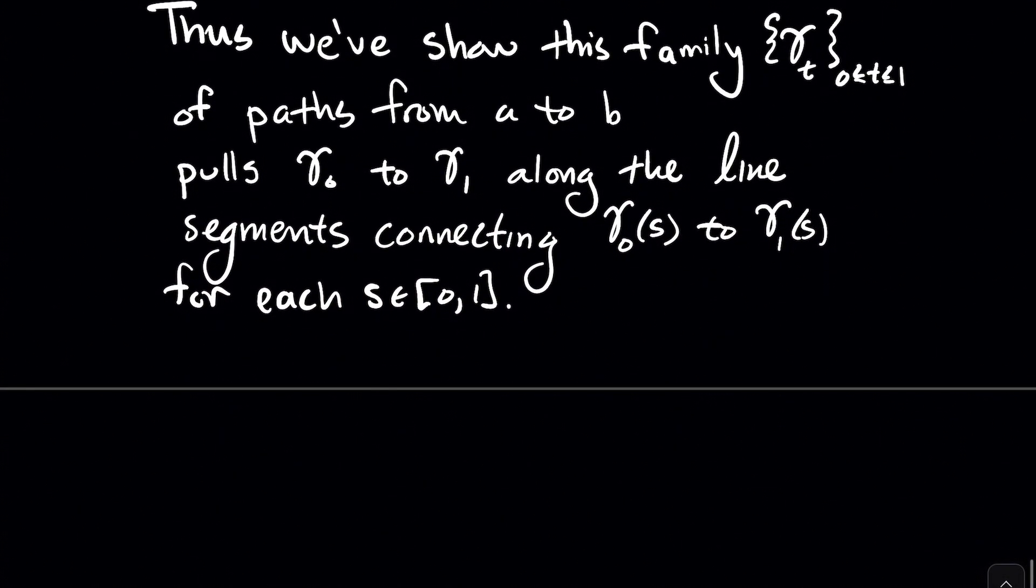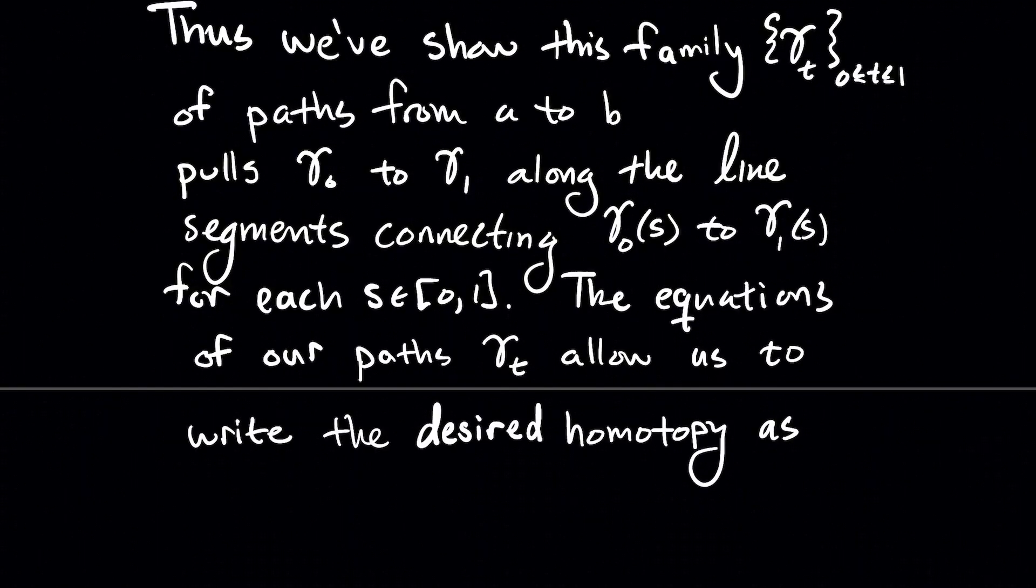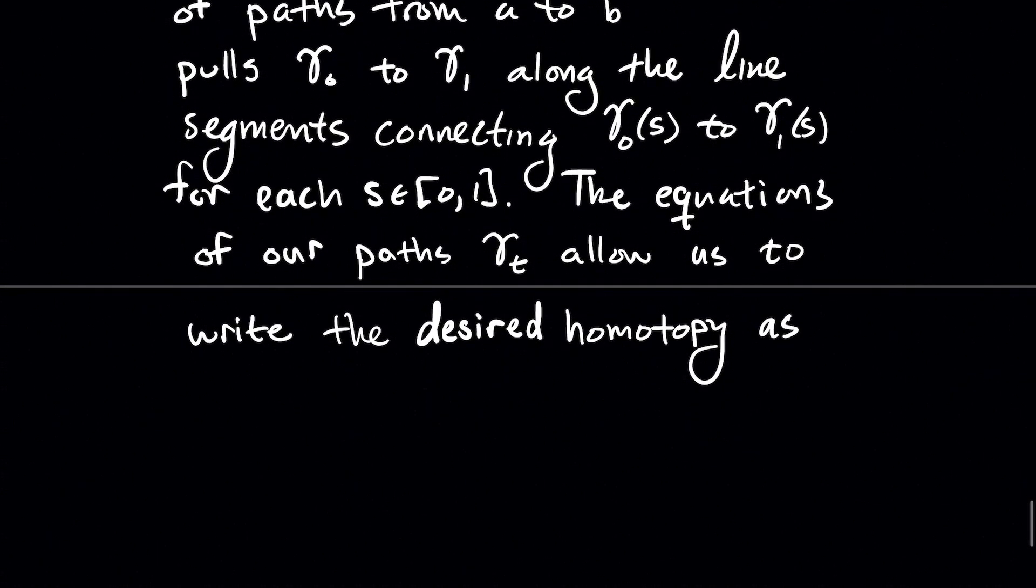So thus we've shown that this family of paths, gamma t, where again t is any real number between zero and one, those are all paths from a to b. And from our line segment argument, we saw that each of these, this family pulls gamma naught to gamma one, like along those line segments. If you thought about you had a line segment for each value of s, so that's what's going to allow me to visualize pulling the red curve into the blue curve.